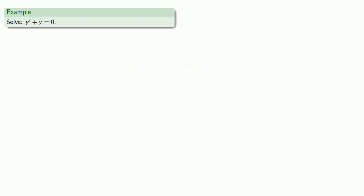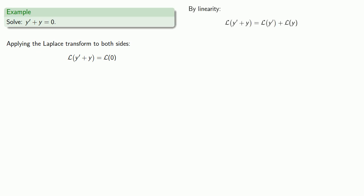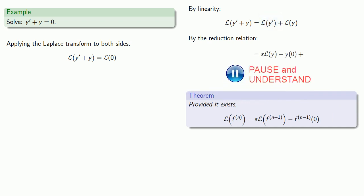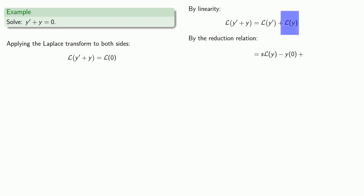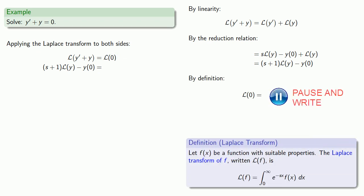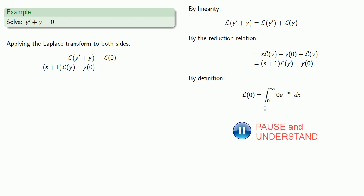Let's see how our approach might work. Let's try to solve the differential equation y prime plus y equals 0. Applying the Laplace transform to both sides, by linearity the Laplace transform of the sum is the sum of the Laplace transforms. By the reduction relationship, the Laplace transform of y prime is s times the Laplace transform of y minus y of 0. The Laplace transform of y is still there. The Laplace transform of 0, by definition, is 0.